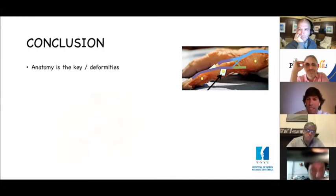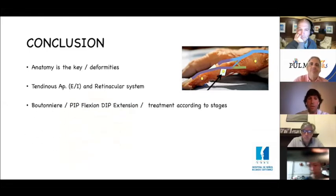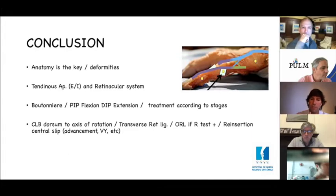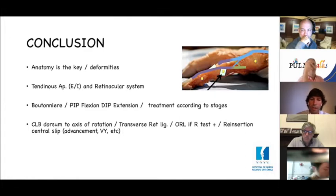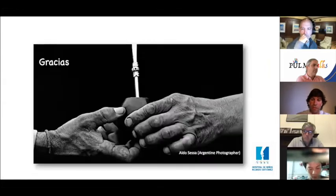In summary: anatomy is key to understanding the deformity and treating each affected stage. We have a tendinous apparatus — extrinsic and intrinsic — and a retinacular system. Boutonniere is PIP flexion and DIP extension. We treat according to stage: take the conjoined lateral bands to the dorsum of the axis of rotation, release the transverse retinacular ligament, release the oblique retinacular ligament if the retinacular test is positive, and reinsert or reconstruct the central slip. Supple joints are required before rebalancing the extensor apparatus.